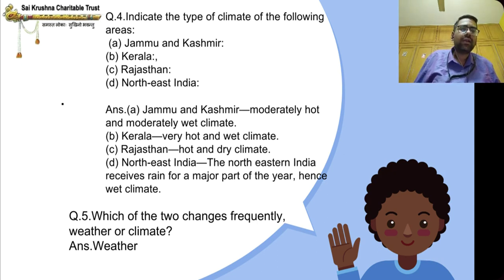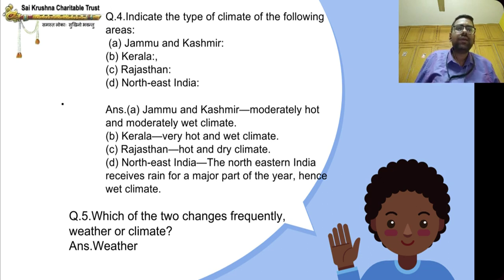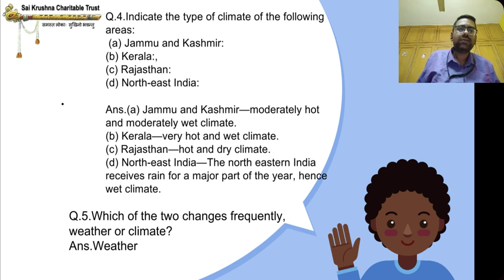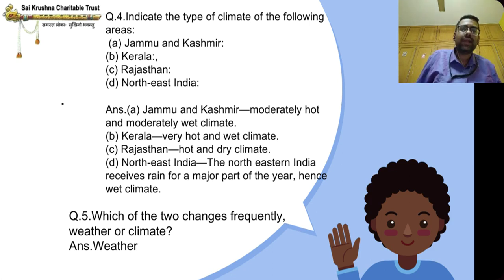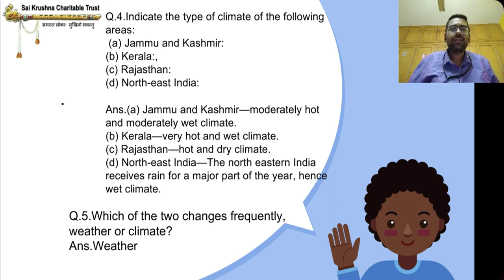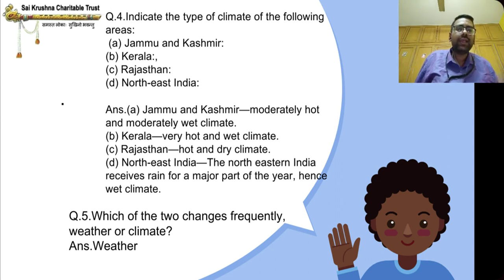Northeast India receives rain for a major part of the year, hence it has a wet climate. To summarize: Jammu and Kashmir — moderately hot and moderately wet; Kerala — very hot and wet; Rajasthan — hot and dry; Northeast India — wet climate.